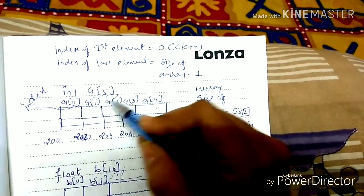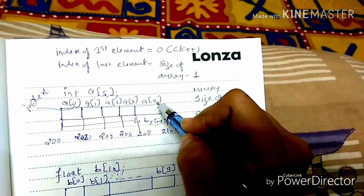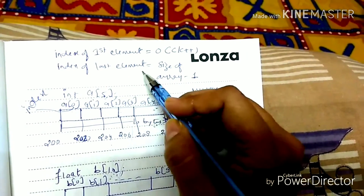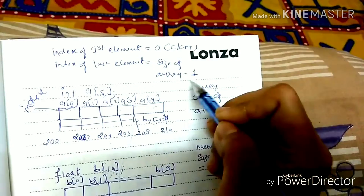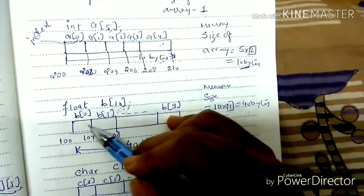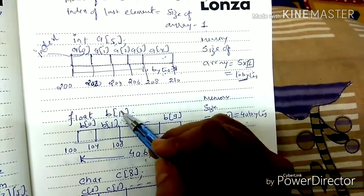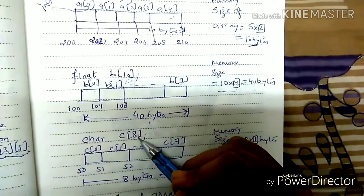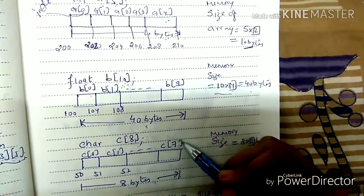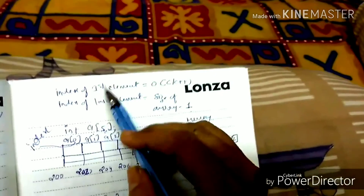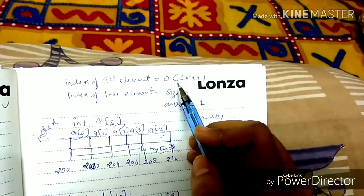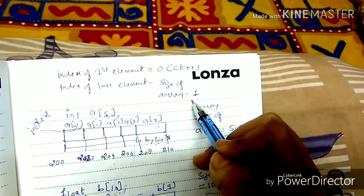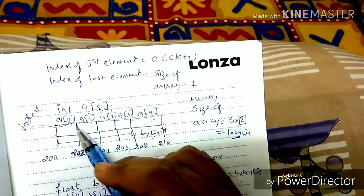If there are 5 elements, what is the last element's index? It is 4, which is 5 minus 1. So the index of the last element is size of array minus 1. For 10 elements, the last element index is 10 minus 1, which is 9. The index of the first element in an array is 0 and the index of the last element is size of array minus 1.